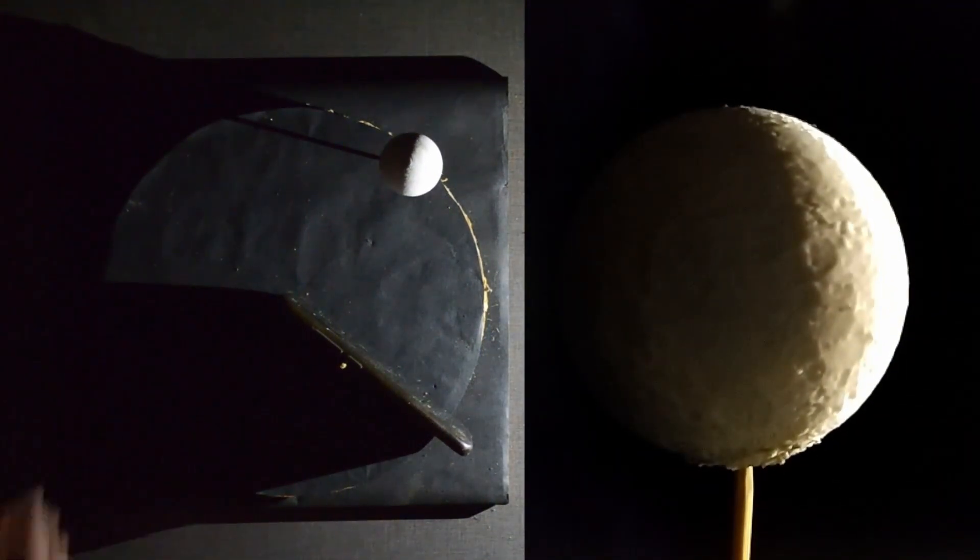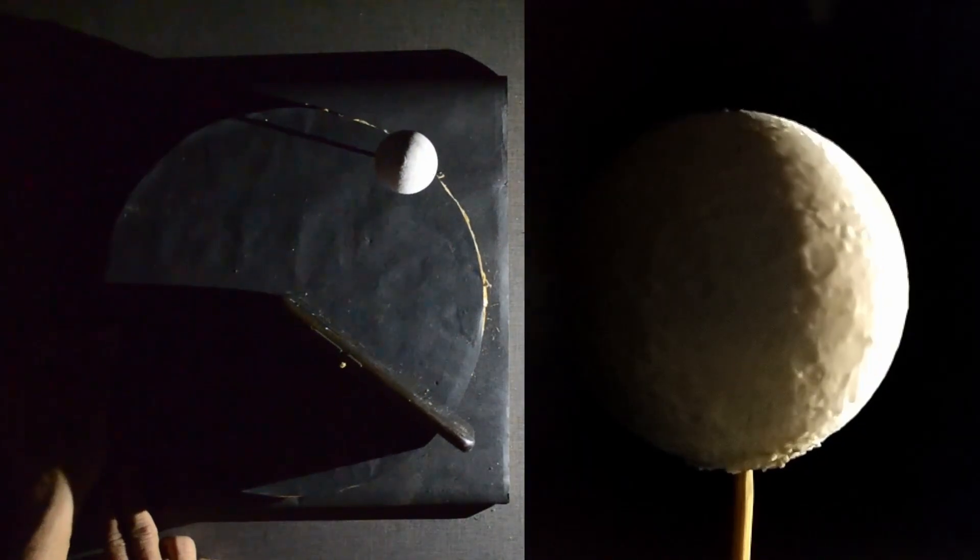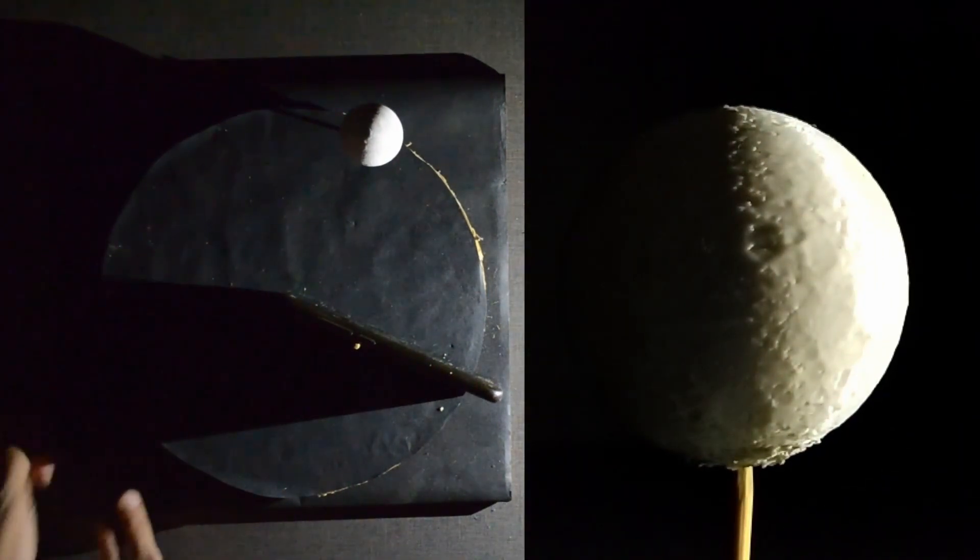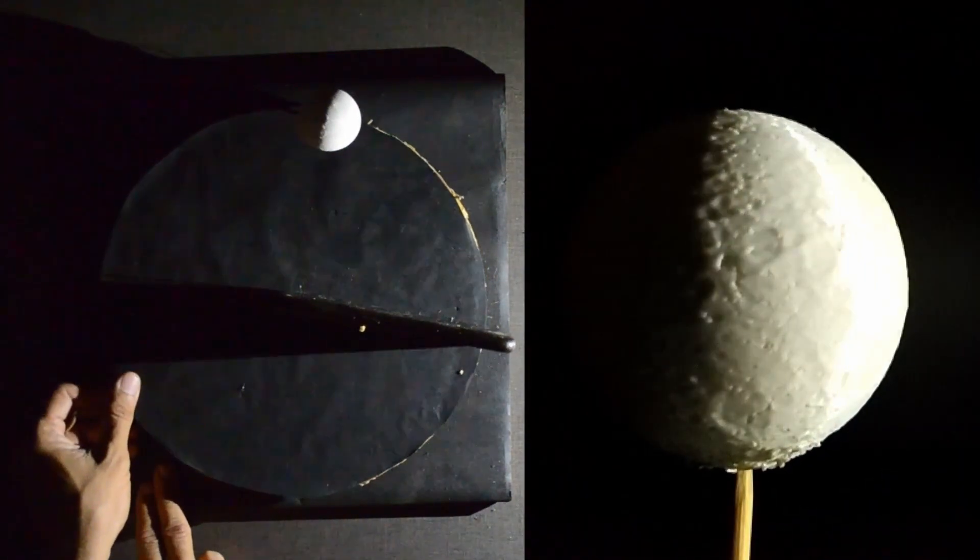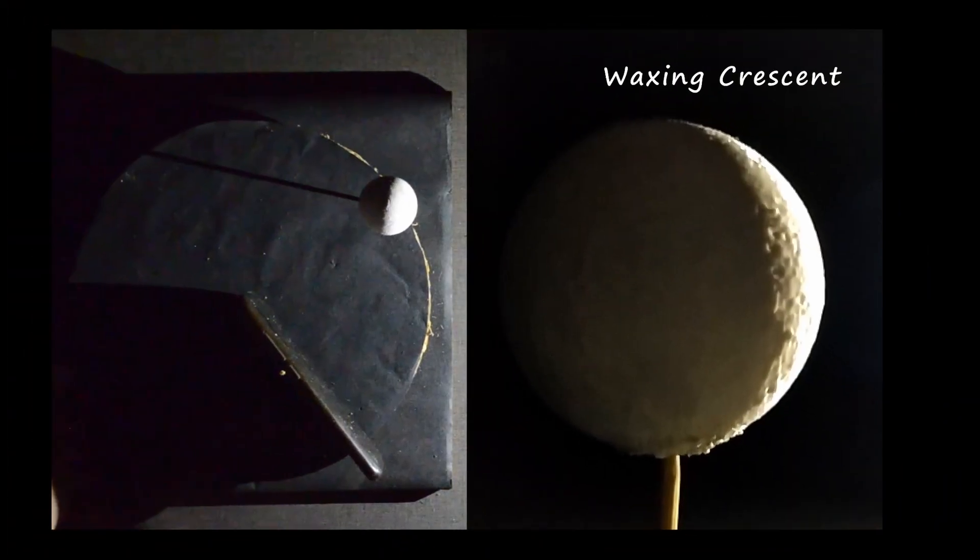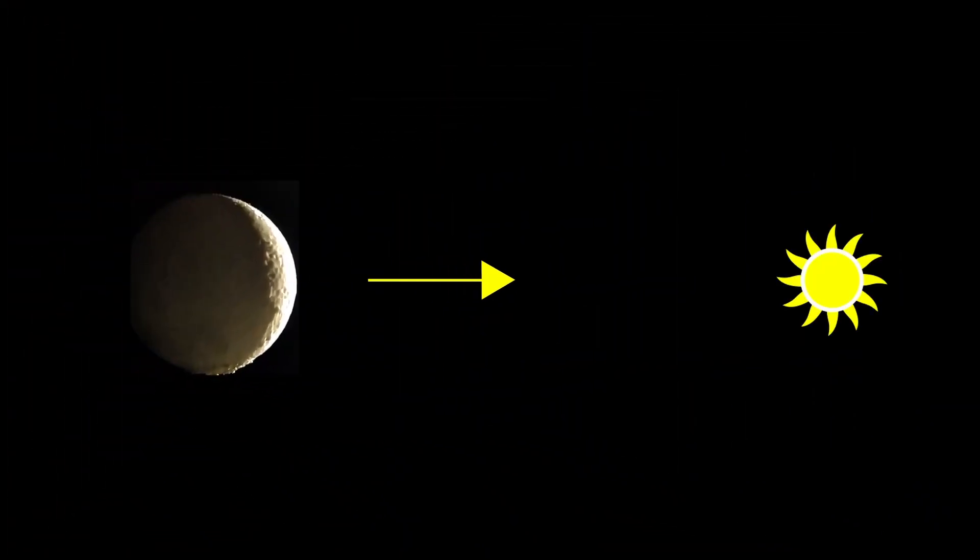We see the moon in the night sky because it is reflecting light from the sun. Moon doesn't generate its own light. The lighted part of the moon always points towards the sun.